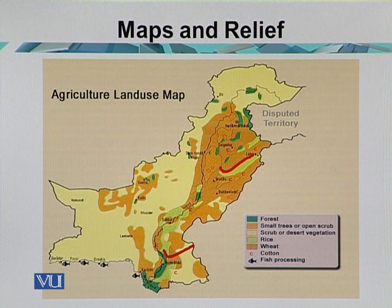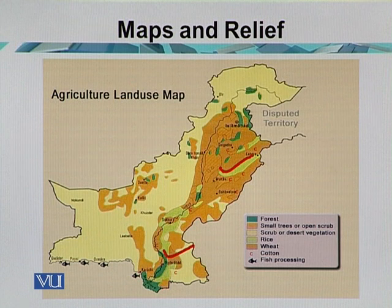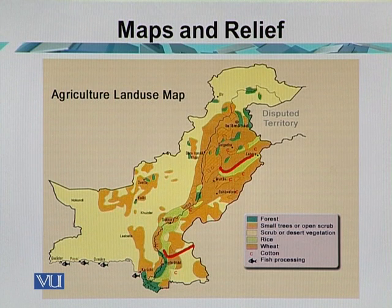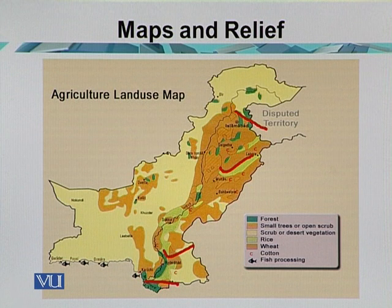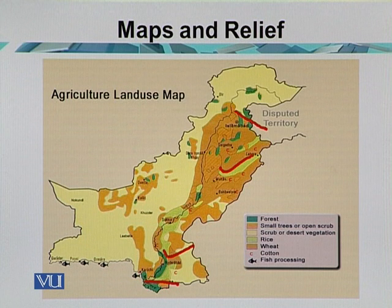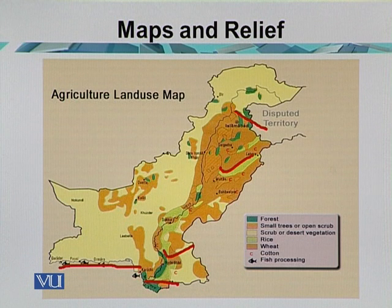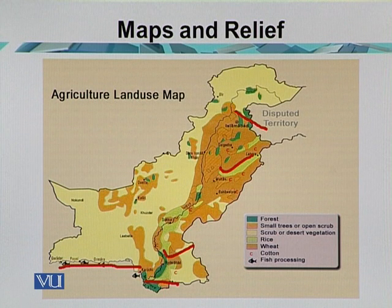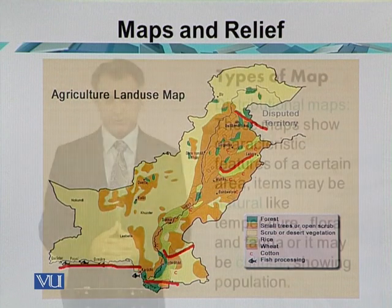The upper Indus Plain is irrigated by five major rivers: the Indus, the Jhelum, the Chenab, the Ravi, and the Sutlej, which mostly belong to the Punjab province. The green color shows the forest areas of the country, mostly to the south and some northern parts. The south of Pakistan also covers fishing and fish processing areas, with harbours and natural seaports, highlighting the economic importance of the map.